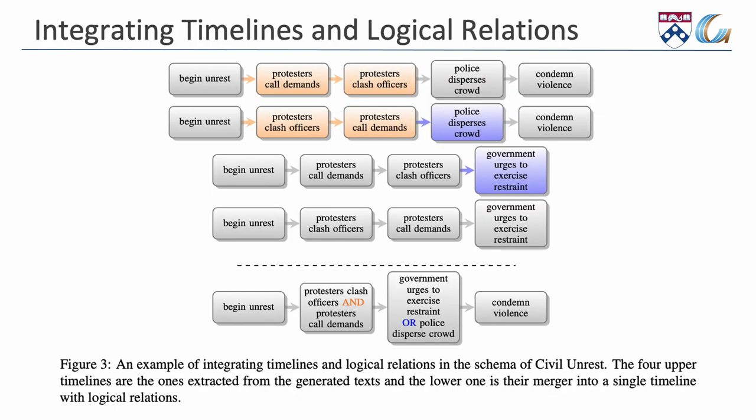After extracting the timeline and hierarchical relations, we connect all the extracted timelines into a single graph by using logical relations. We place a logical AND between events if both events can occur at the same time or there is no significance to the order between them. We use a logical OR to mark events that can occur simultaneously but not necessarily.